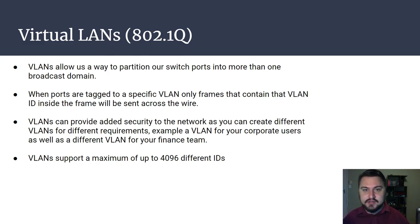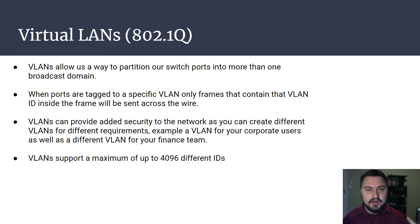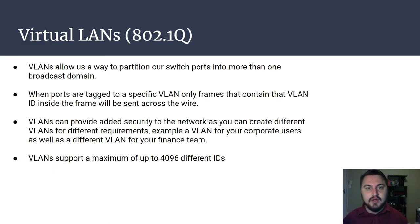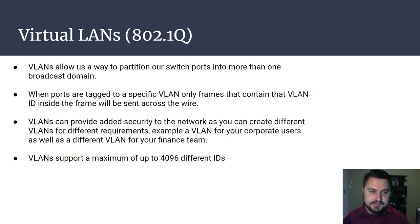If you want those VLANs to communicate with each other, you'll have to start looking at things like routers to do that. When ports are tagged to a specific VLAN, only frames that contain that VLAN ID will be sent across the wire. So if a broadcast message is sent out on VLAN 1, only the ports on VLAN 1 will get that broadcast — none of the ports on a different VLAN will receive it. It's kind of a security thing as well; it helps partition and section out the network as needed.